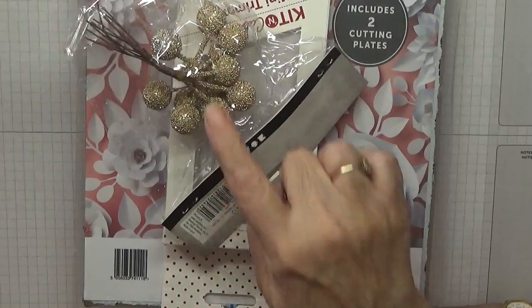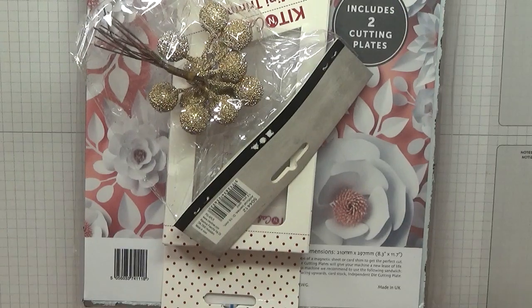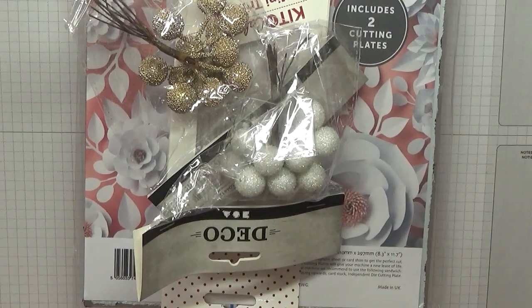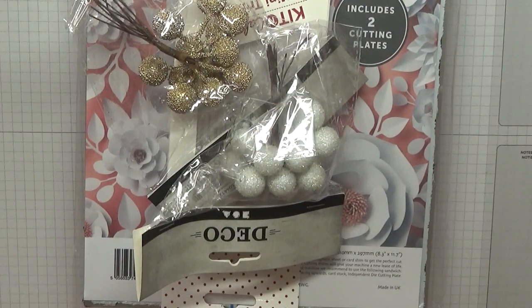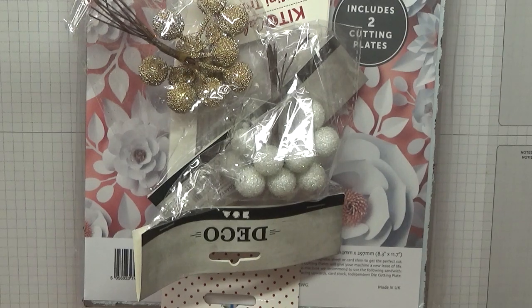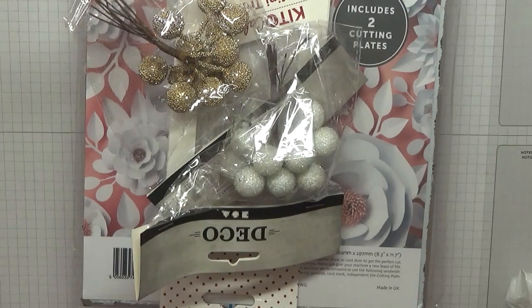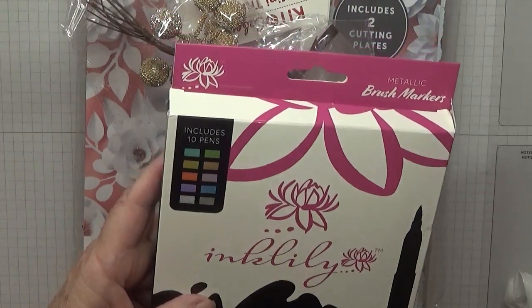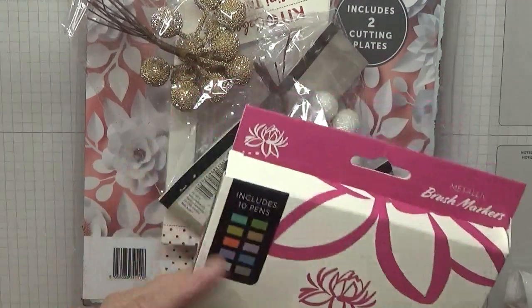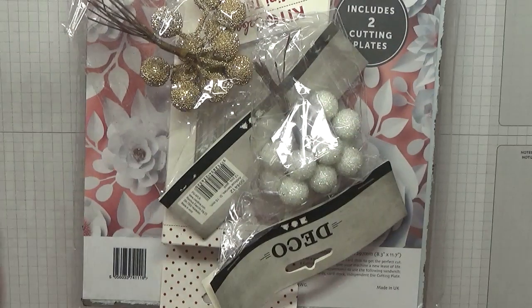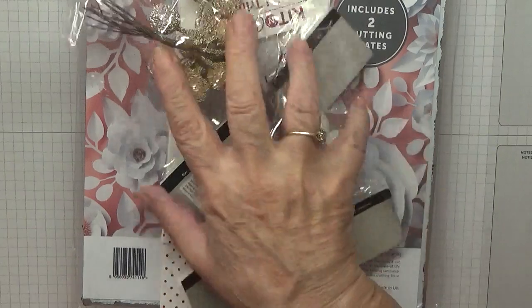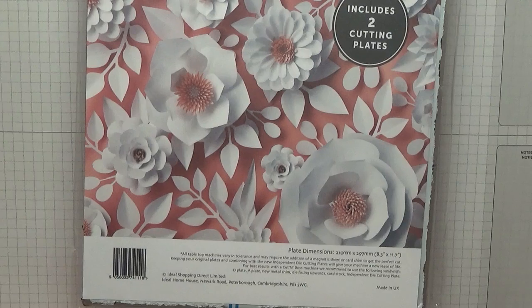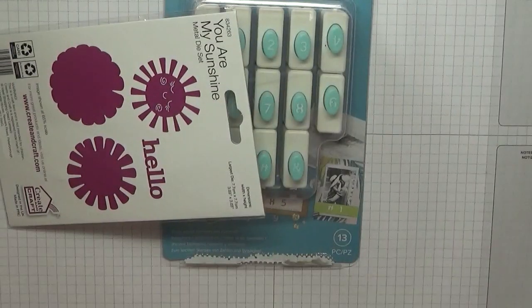These are four ball things, gold and silver. There's loads of them. Oh, some metallic brush markers. They're called Inky Belly and there's ten in a packet. I will use these on one of my cards. Remember, this only cost 20 pounds. I don't know how much these are when you buy them separately.